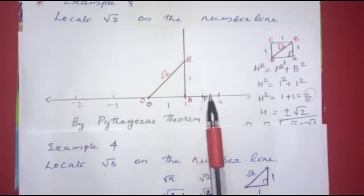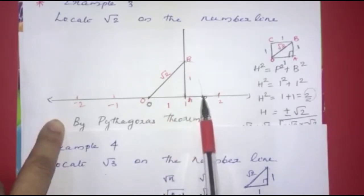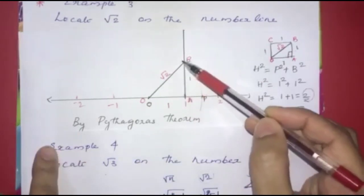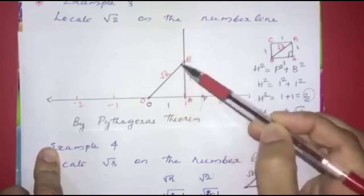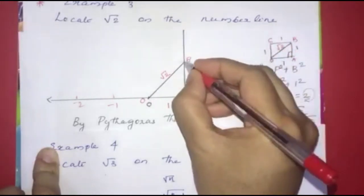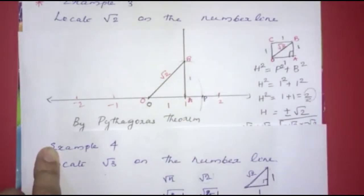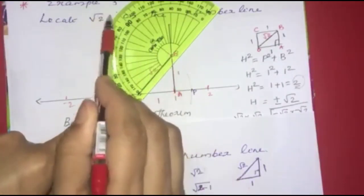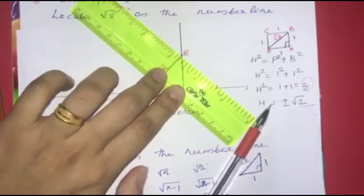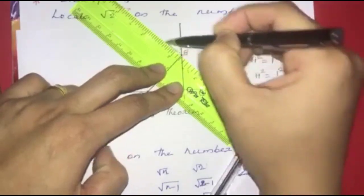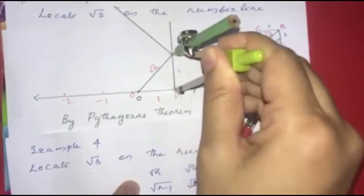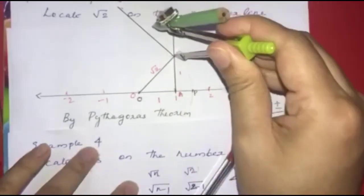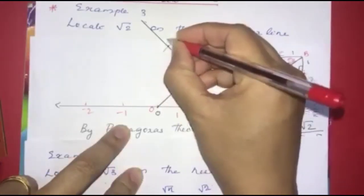If we use root 2, we have OP = root 2. Now with root 2 as base and 1 as perpendicular, we draw a right-angle triangle and draw a 90-degree angle. We mark this point. We have root 2 as base and 1 unit as perpendicular. This gives us OD² = 1 + (root 2)² = 1 + 2 = 3, so OD = root 3.